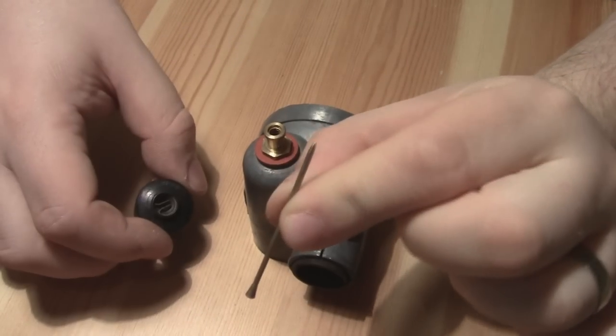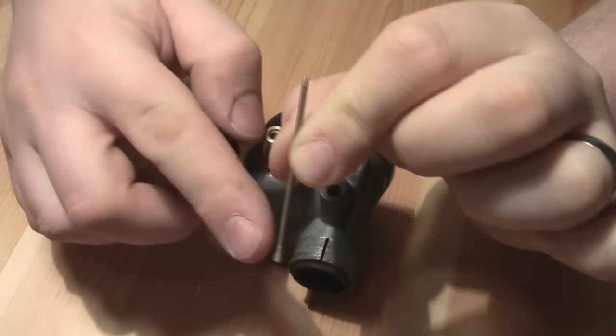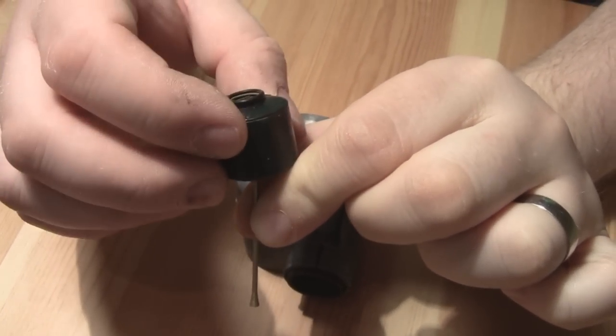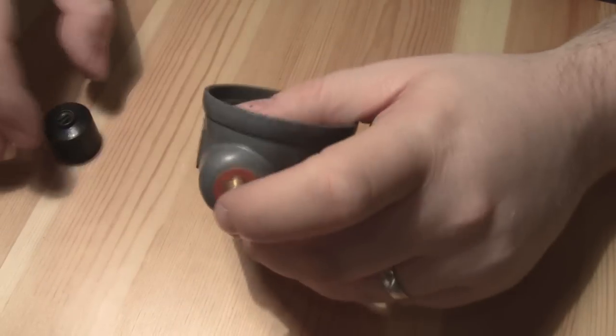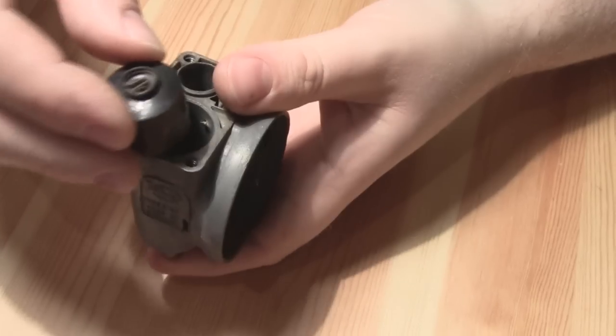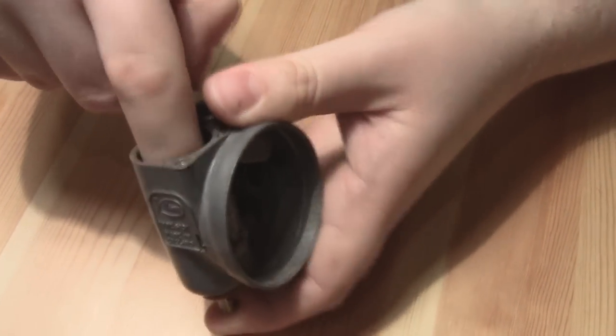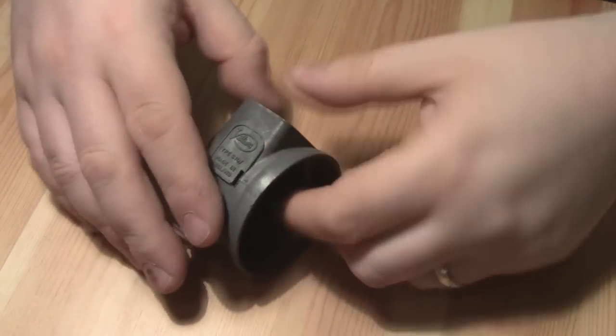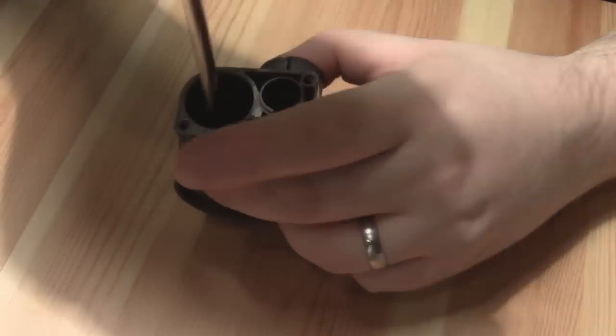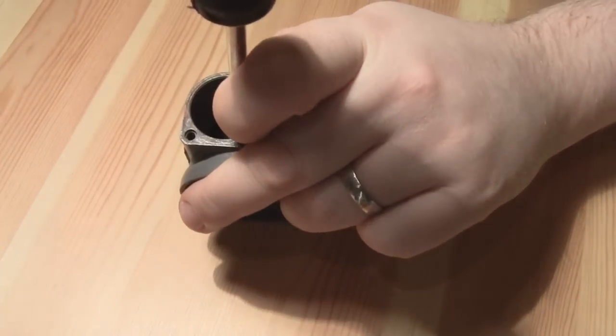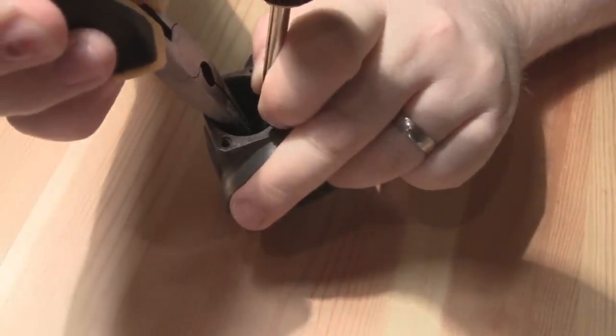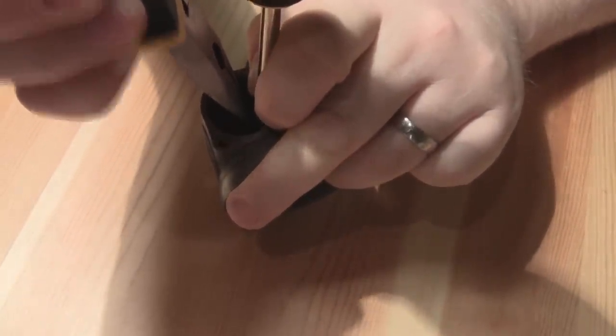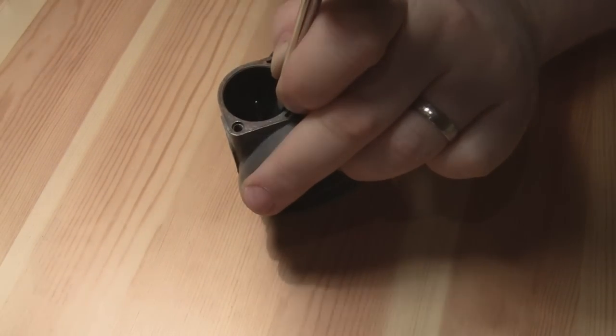So the needle valve goes that way with the seat at the bottom and then the float goes over the top and clips in at that point. So the needle valve goes in the bottom there and then, it's a bit fiddly, but the float goes in on top. If you hold the float down with the screwdriver and then get some needle nose pliers and pull the needle up, you can hear that click into position there.